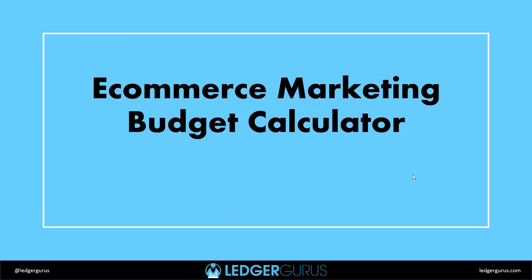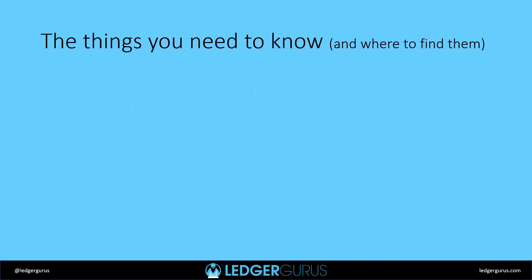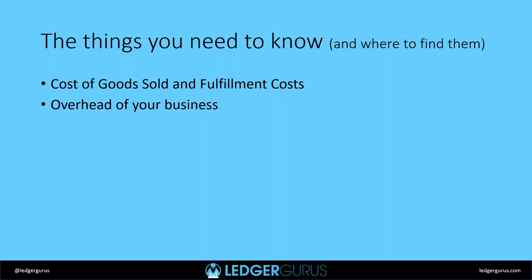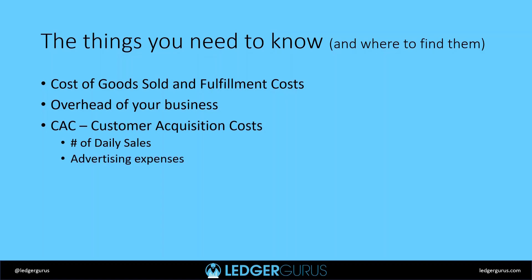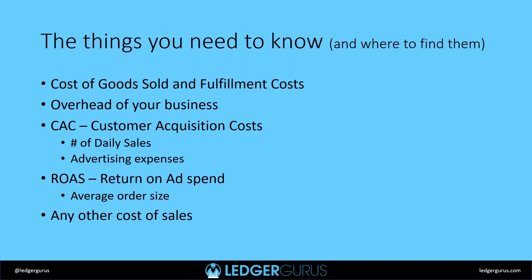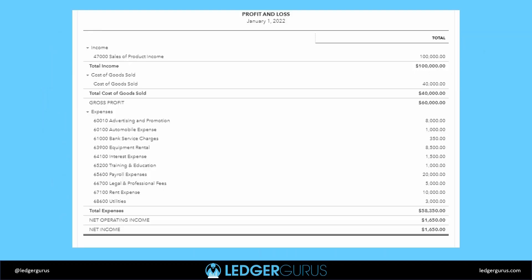First, let's talk about a list of things you need to know in order to make these determinations about marketing. First, you need to understand your cost of goods sold and fulfillment costs. Second, you need to understand the overhead cost of your business. Then we get into marketing metrics: CAC stands for customer acquisition cost, which requires knowing your number of daily sales and advertising expenses. You also need to know your ROAS — return on ad spend — which requires your average order size, and finally any other cost of sales like agency fees.